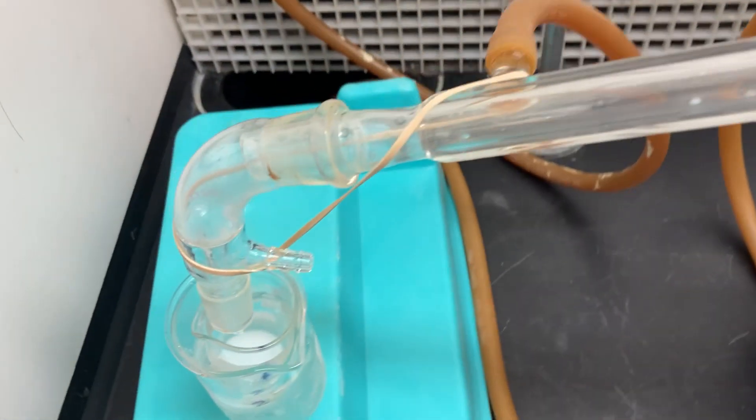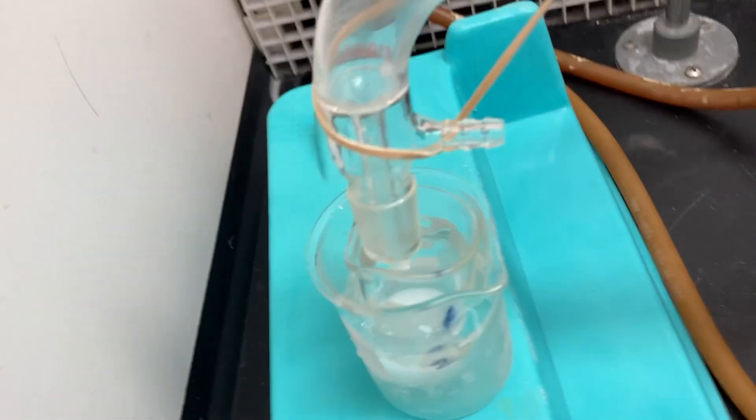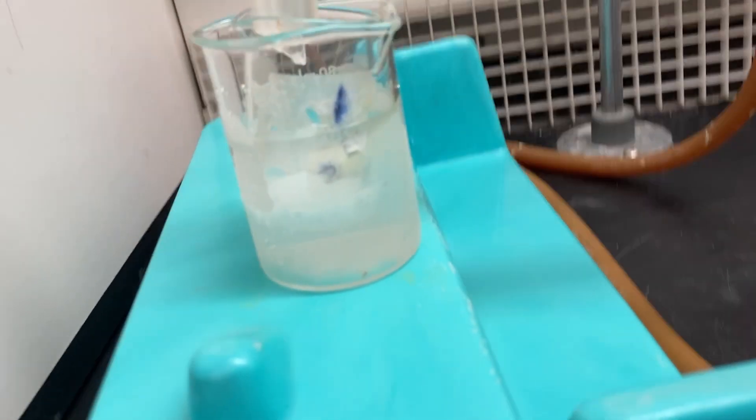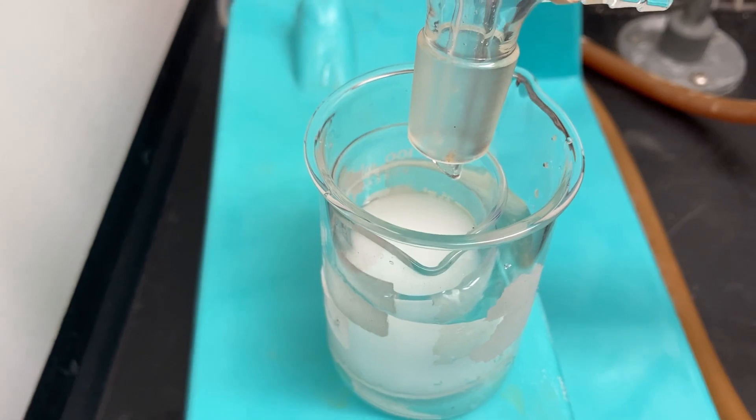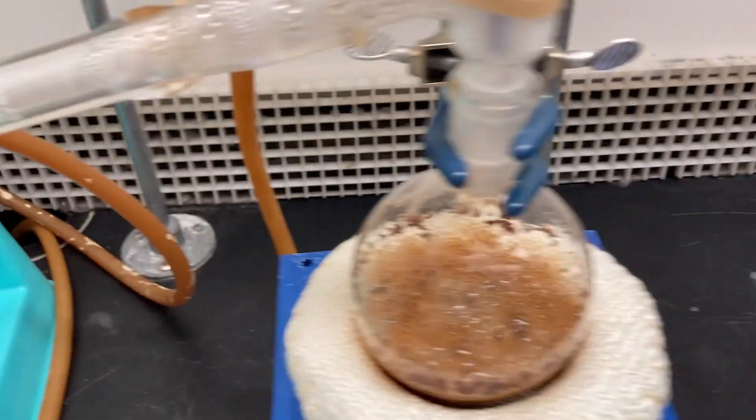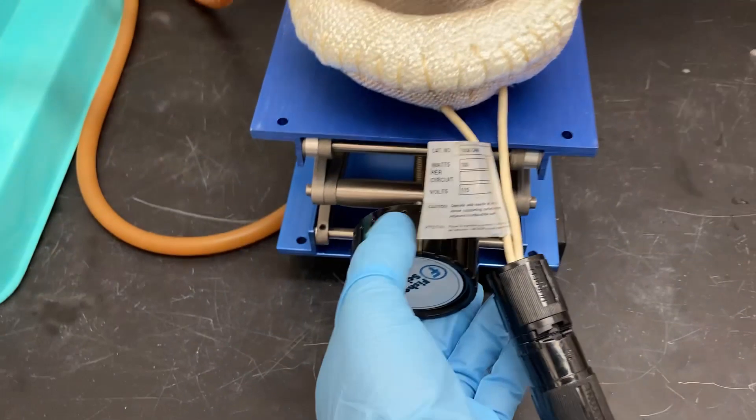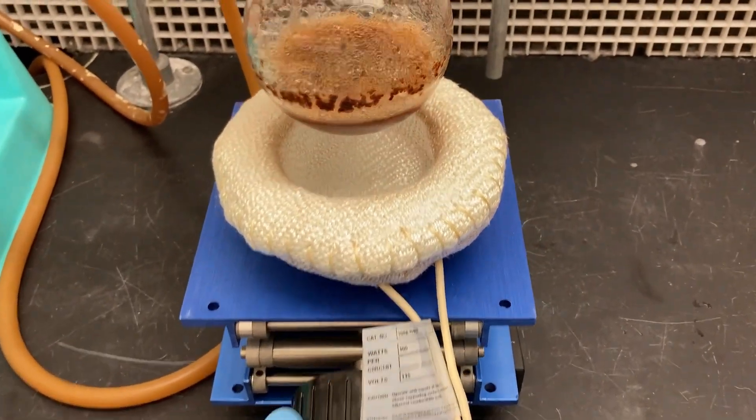Keep track of the volume of the distillate. Once we reach 25 milliliters, we'll be able to shut down the distillation. Make sure you lower the heating mantle away from the round bottom flask to prevent the spice from charring.